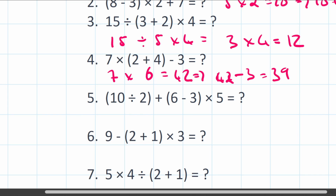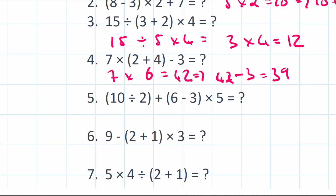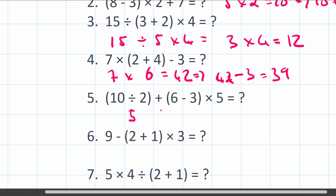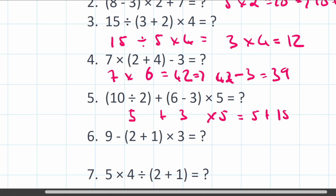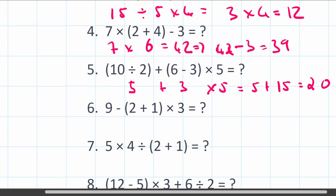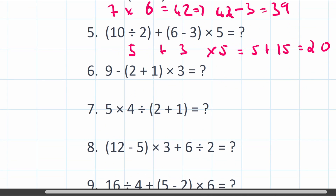Question 5: (10 divided by 2) plus (6 minus 3) multiplied by 5. There are two brackets, so do both first: 10 divided by 2 equals 5, and 6 minus 3 equals 3. Then multiplication: 3 times 5 equals 15. Finally, addition: 5 plus 15 equals 20.